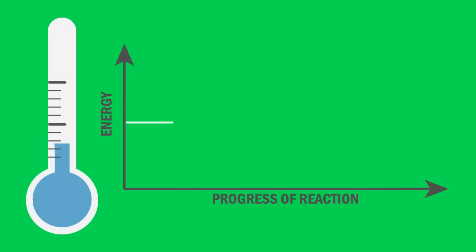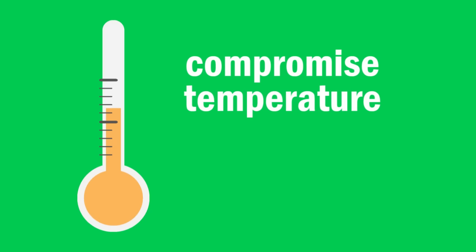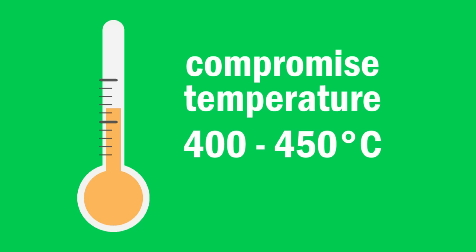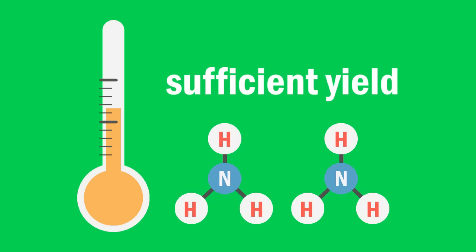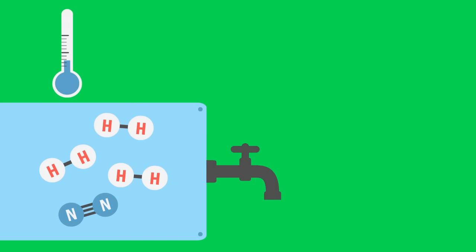If a low temperature were used, the rate of reaction would be very slow, though the exothermic reaction would be favored. It would actually take a long time for equilibrium to be reached, so a compromised temperature of 400 to 450 degrees Celsius ensures that the reaction proceeds with sufficient yield. The yield of this process is 10 to 20%. Remember that unused gases are recycled, so no reactants are wasted.